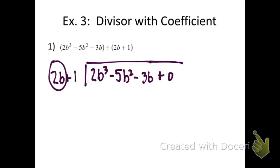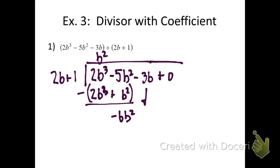And just like before we multiply it out: what do I multiply 2b with to get 2b cubed? You multiply by b squared. b squared times 2b is 2b cubed. b squared times 1 is positive b squared. Subtract this. You get 2b cubed minus 2b cubed is 0. Negative 5b squared minus b squared is minus 6b squared. Bring down the next term, which is negative 3b.